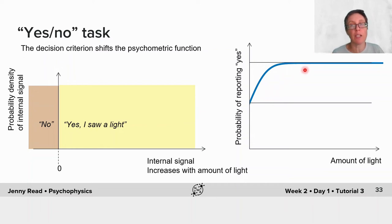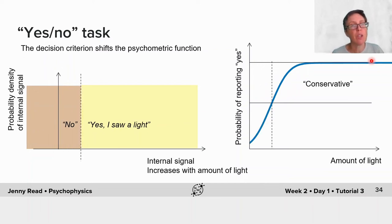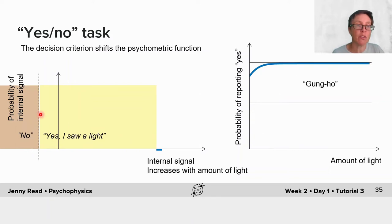If you have a more conservative subject who requires quite a considerable signal before they report seeing a light, that will shift the psychometric function to the right. Or you might have a very gung-ho person whose decision criterion is actually negative, and so they're saying yes, I saw a light almost all the time, even when no light was actually present. In other words, you're confounding their sensitivity and their decision criterion.